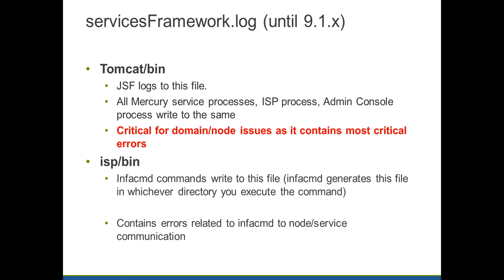The services framework.log is a log that was introduced in version 9 for the Java service framework. All the logs from the JSF get written into services framework.log, which is in Tomcat bin. This file is critical for domain and node issues since it contains critical errors. All the Mercury service processes, like the ISP, the admin console, and all services like MRS, DIS, etc., write to this file until 9.1. There is also another services framework.log in ISP bin, which has InfoCMD command errors.